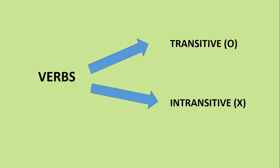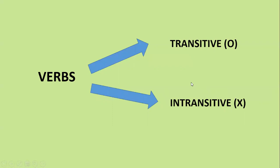Verbs are of two types: transitive verb and intransitive verb. Only if the verb is a transitive verb can you transform active into passive. How to identify a transitive verb? Transitive verbs have an object in a sentence, whereas for intransitive verbs there is no object at all.